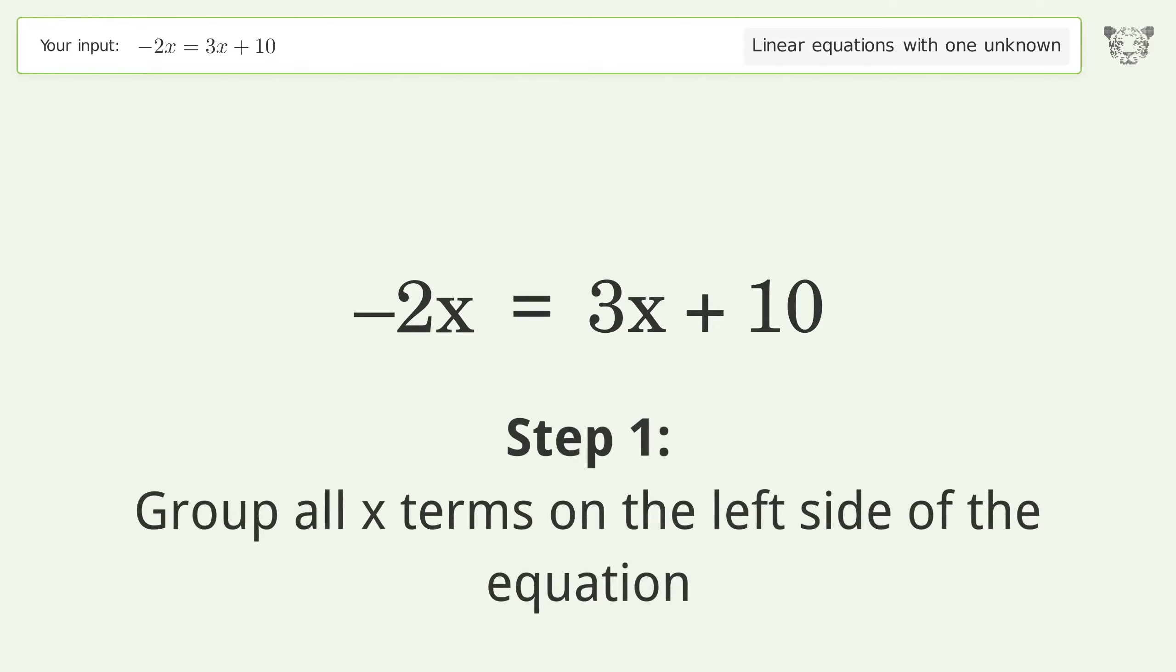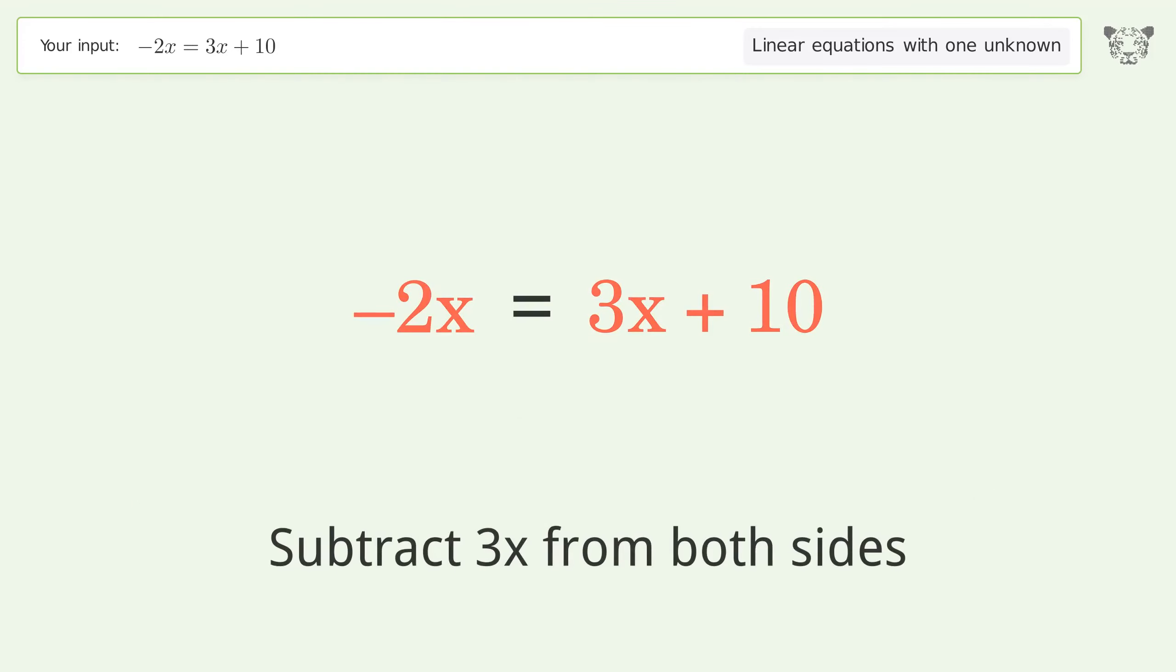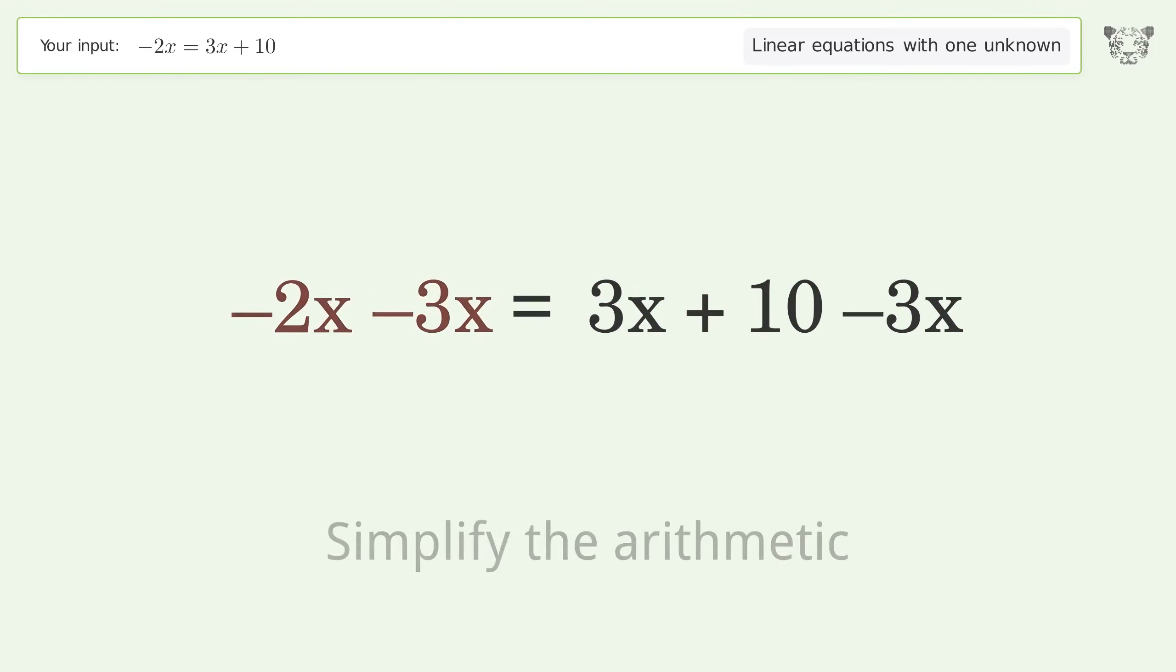Group all x terms on the left side of the equation. Subtract 3x from both sides. Simplify the arithmetic.